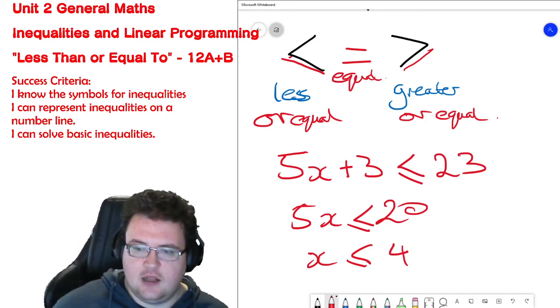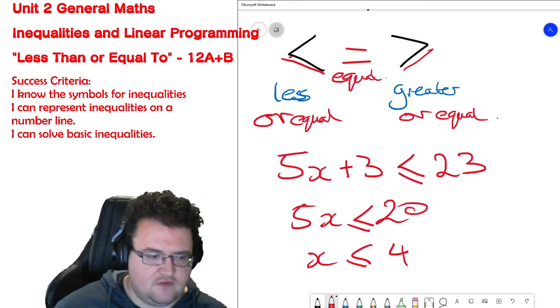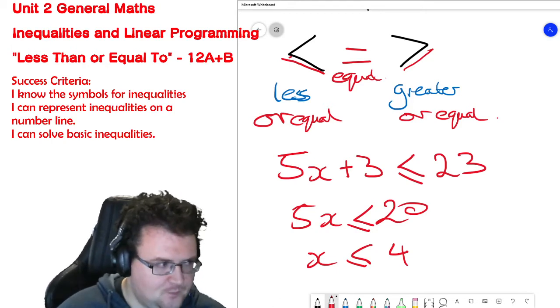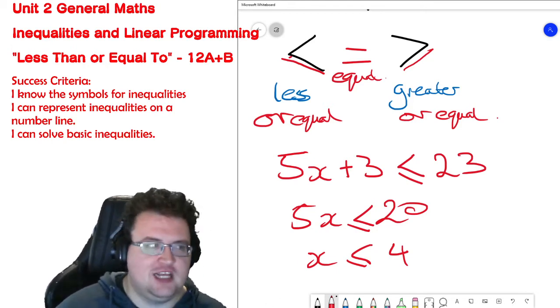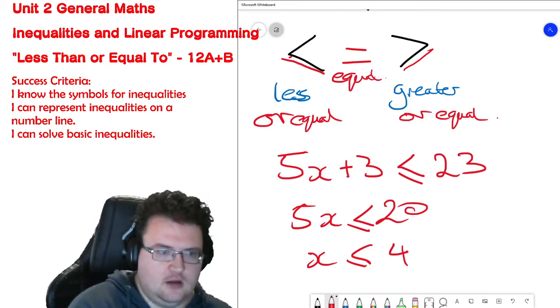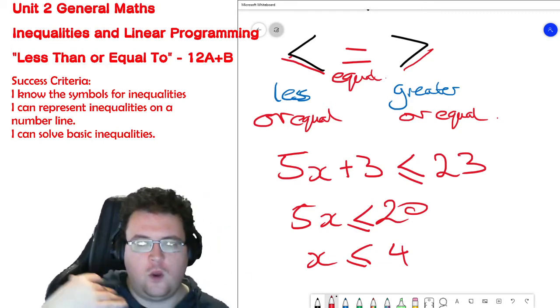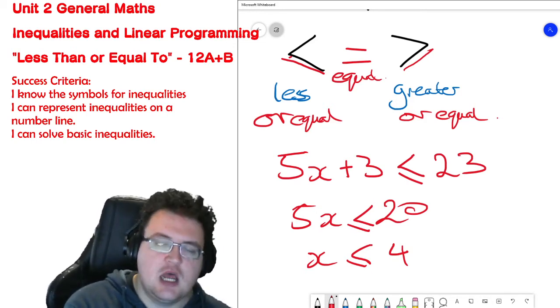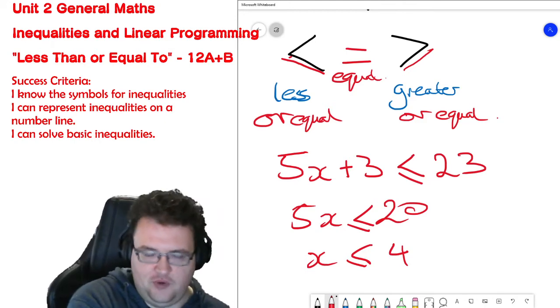What we're looking for is any possible value of x that still results in a true statement. When we're dealing with normal linear equations, there is one answer. But when we're working with inequalities, we have an infinite number of answers up to and including a certain point.